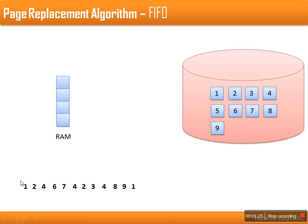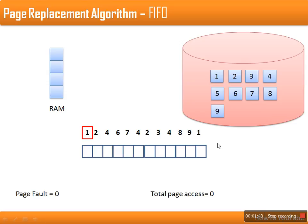When a reference is made for an address, we check if that address is available in memory. Page number one is referenced but is not available in RAM, so it is loaded into memory. Whenever a page is referenced and not available in RAM, that is counted as a page fault. So far we have done one page reference and it resulted in one page fault. Whenever a page fault occurs, that page is loaded into memory.